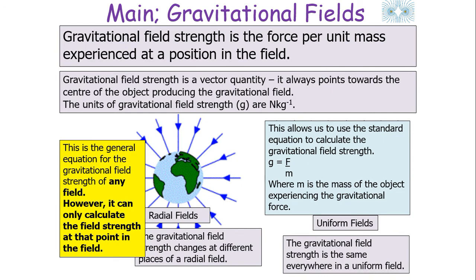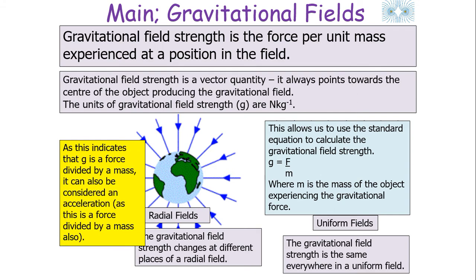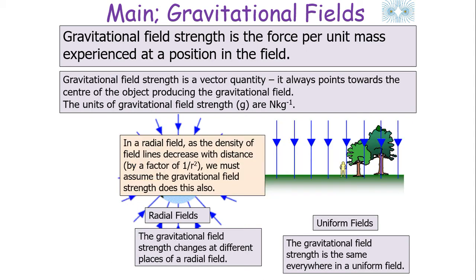This equation can only calculate field strength at one point in the field. Since g is a force divided by a mass, we could also consider g to be an acceleration, because from Newton's second law a = F/m, and g = F/m — so g could also be considered an acceleration. Therefore another unit for gravitational field strength is metres per second squared. In a radial field, as the density of field lines decreases with distance by a factor of 1/R², the gravitational field strength does the same.